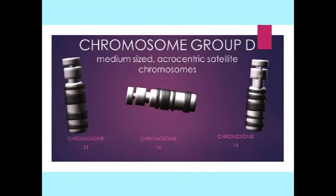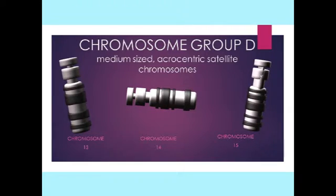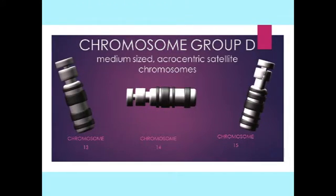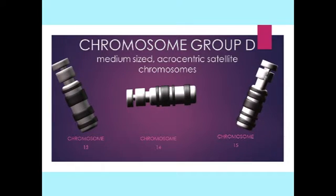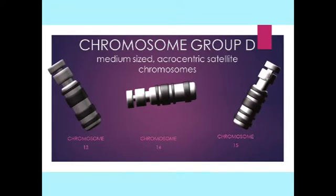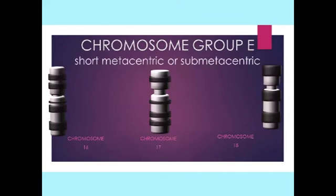Group D chromosomes include chromosomes 13 through 15, which are medium-sized, acrocentric, and include a secondary constriction, making them satellite chromosomes.